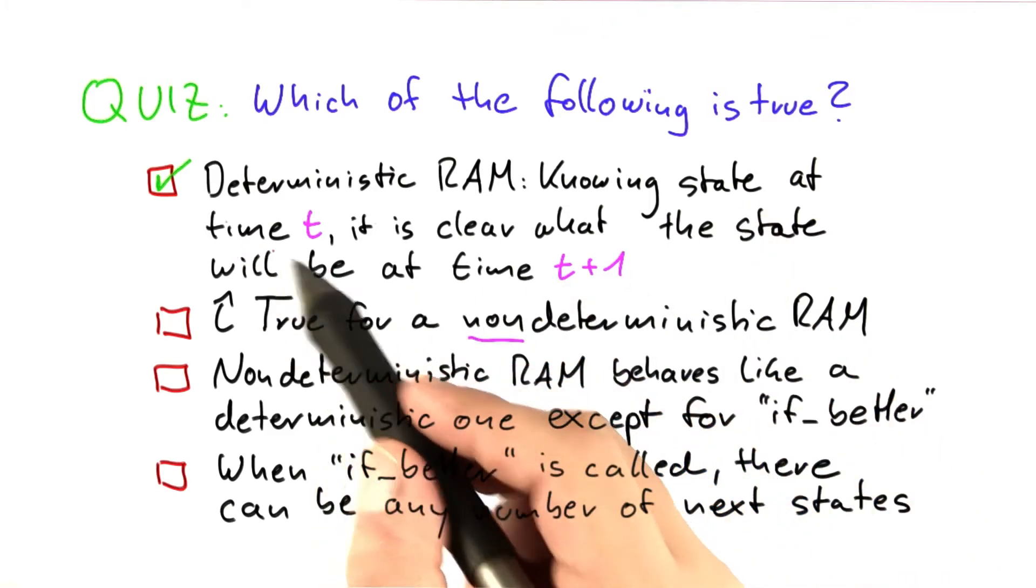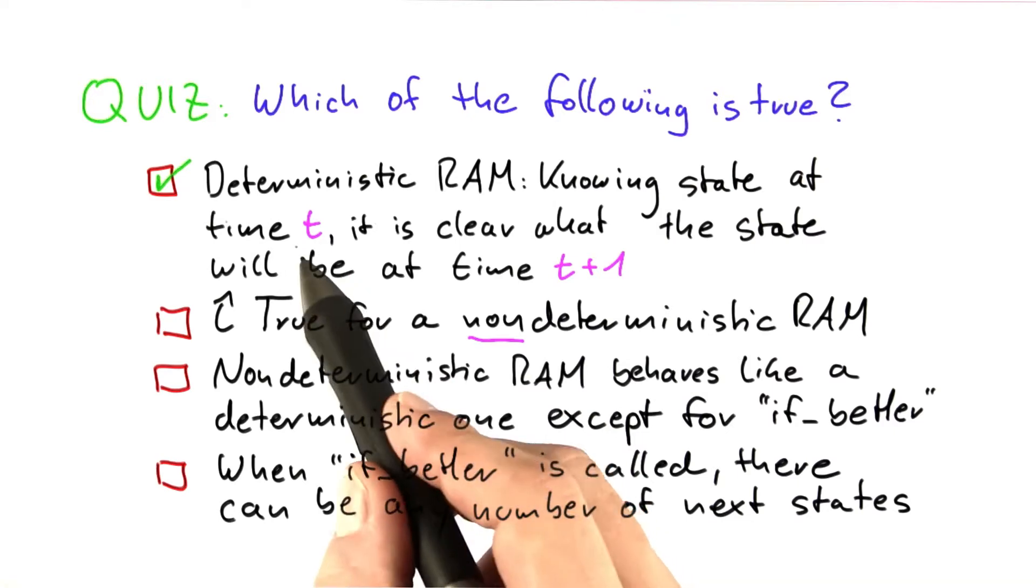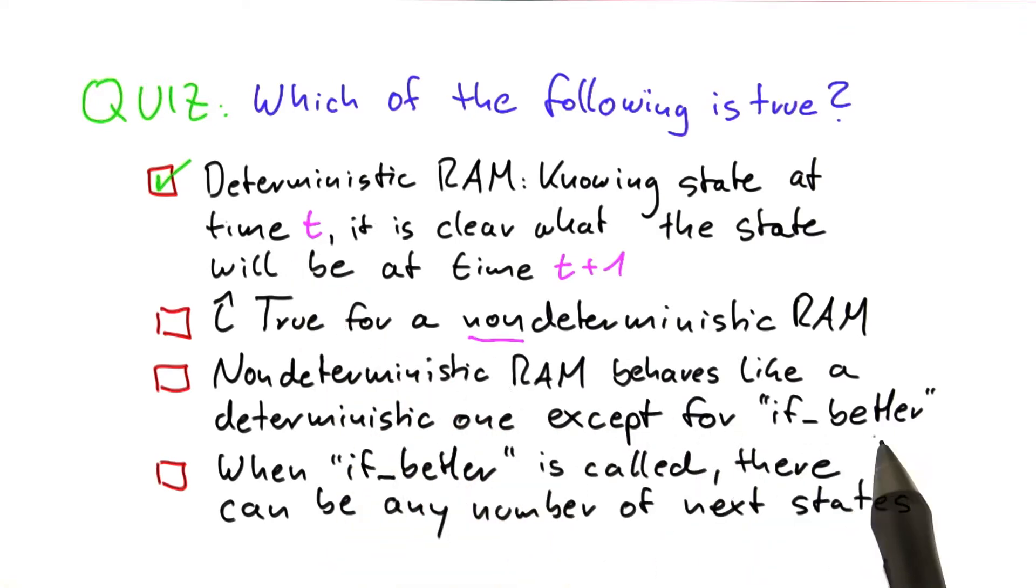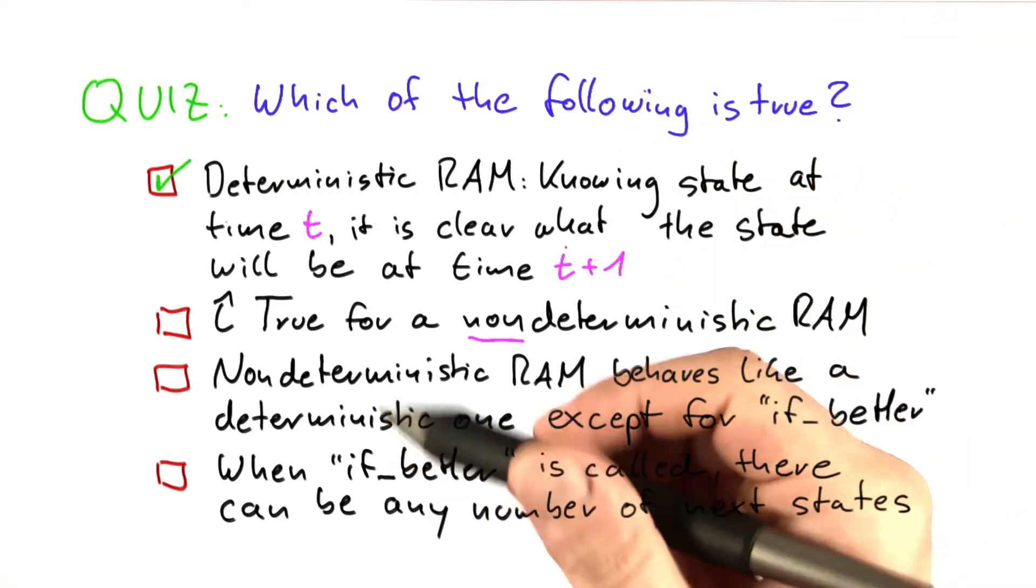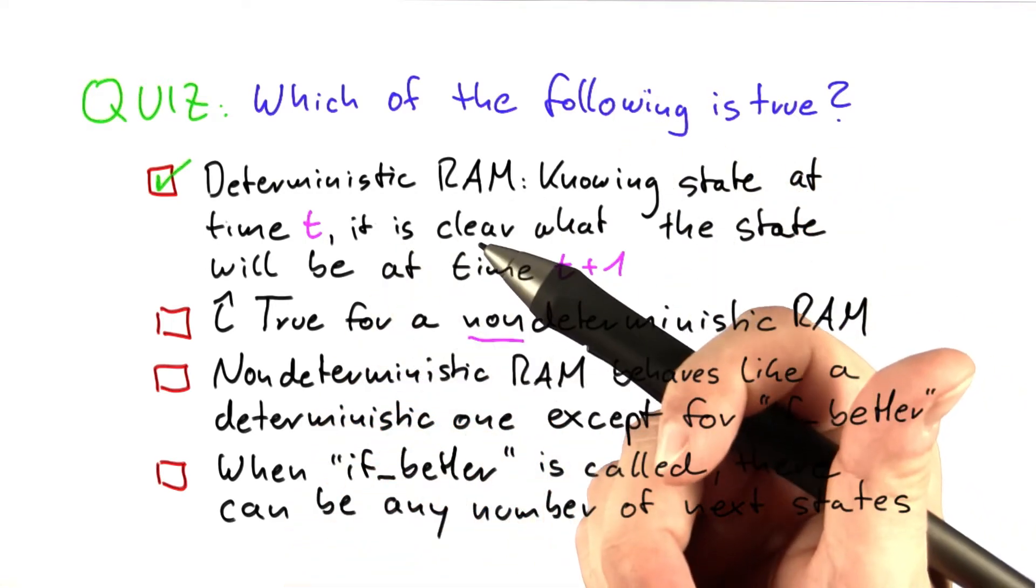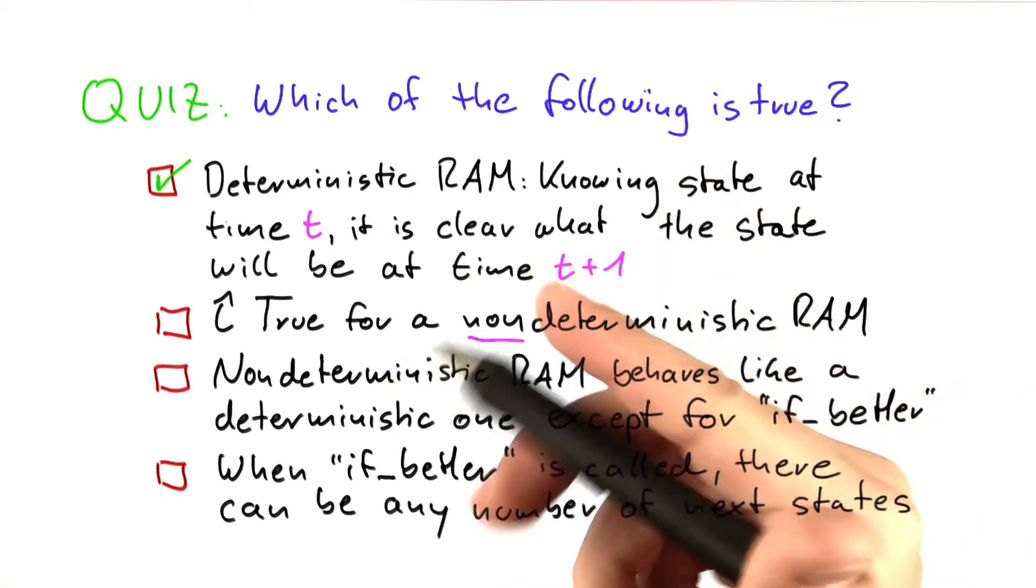The second one is not true because we have the if better function. And so if we know the state of a non-deterministic RAM at time point t, and at that point in time we call the if better function, then we cannot say what the state will be at time t plus 1. There are basically either the first part of the code is executed or the second part of the code is executed.